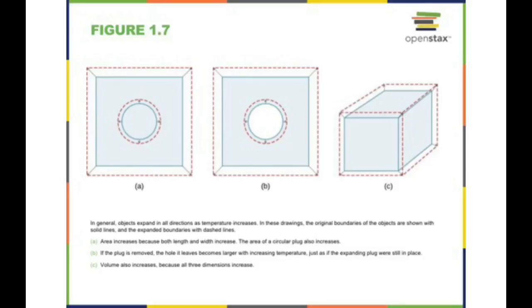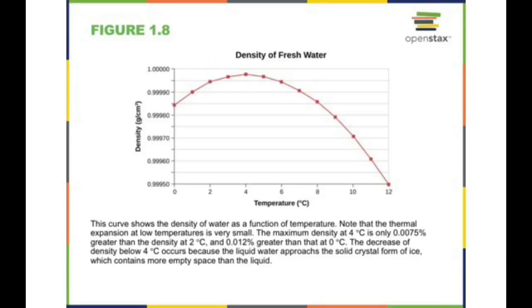Water has maximum density at 4 degrees Celsius. Looking at a density-vs-temperature graph: the density increases from 0 to 4 degrees Celsius, reaches a maximum at 4°C, and then behaves like any other liquid — if you continue heating beyond 4°C, volume increases and density decreases. Between 0 and 4 degrees Celsius, water has this remarkable anomalous property.